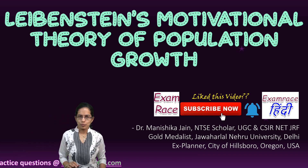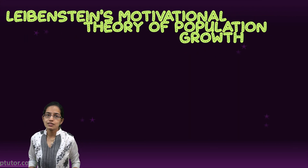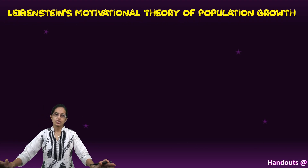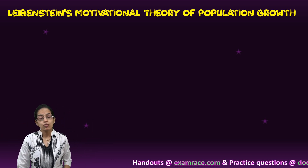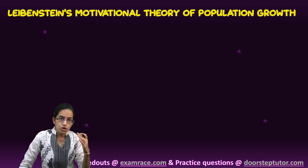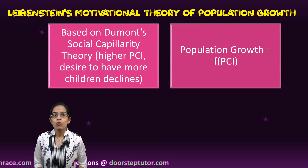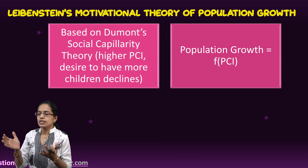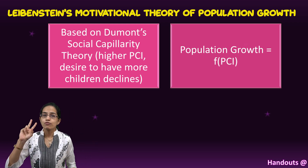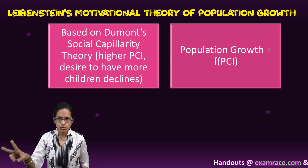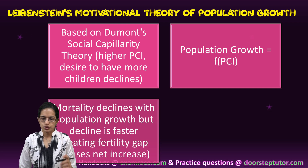Levinstein's motivational theory for population growth is very interesting because what Levinstein believed was that population growth is a function of per capita income. His basic idea was based on Deumont's social capillarity theory, which we have covered in a separate lecture. The idea was that with higher per capita income, the desire to have children declines, and that is a function of two important things: utility — the three types of utility he mentioned — and the two types of cost he focused on.